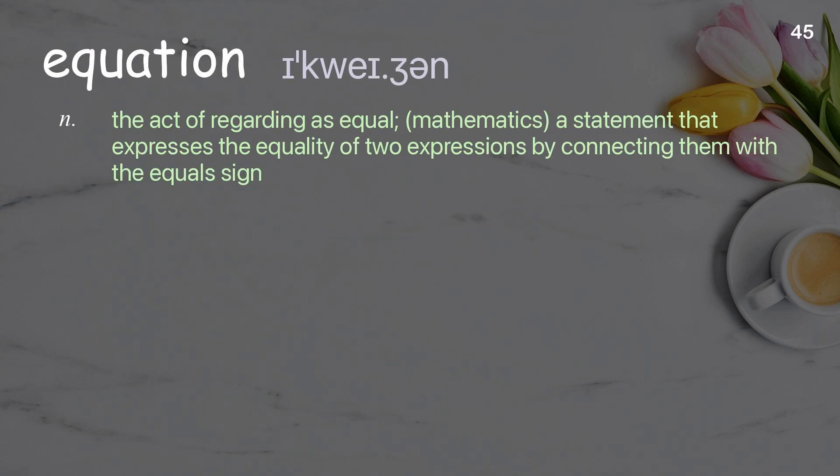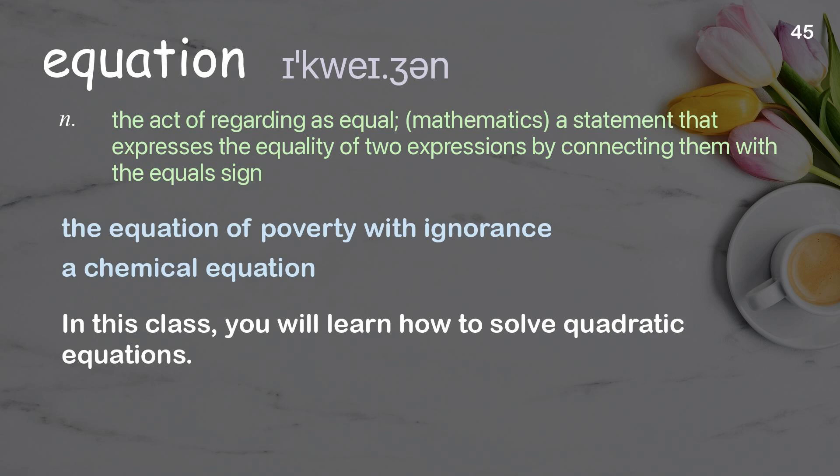Equation: the act of regarding as equal; in mathematics, a statement that expresses the equality of two expressions by connecting them with the equal sign. Examples: The equation of poverty with ignorance. A chemical equation. In this class, you will learn how to solve quadratic equations.